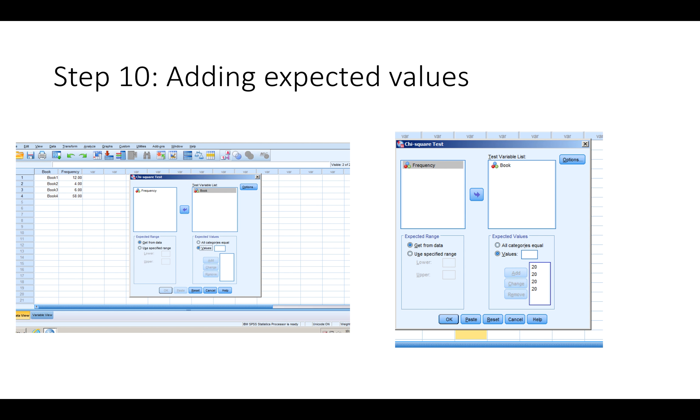Now we need to add the expected values. So if you go down here to where it says values and click it, you're going to add 20 four times. Because we expect each book to be equally likely and since we have 80 data points and 4 books, we expect each book to get 20 votes. So you're adding 20 four times and then clicking OK.